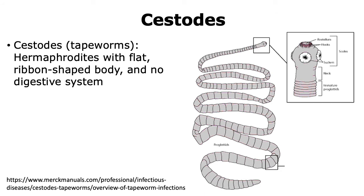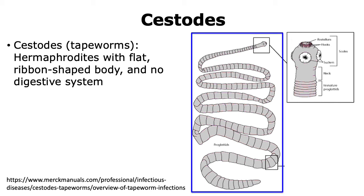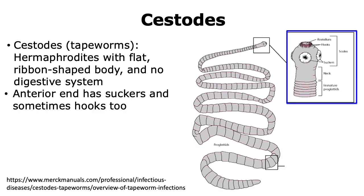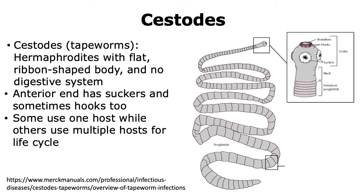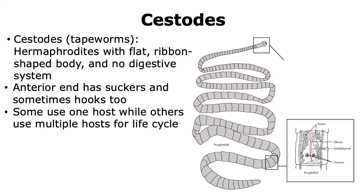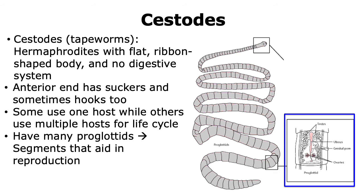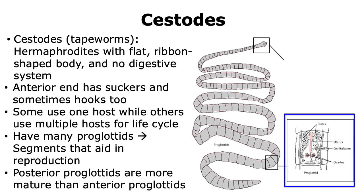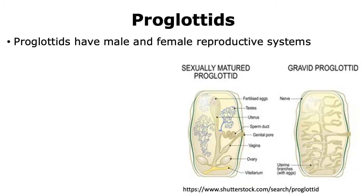Cestodes are helminths also known as tapeworms. These are hermaphrodites with a very flat, ribbon-shaped body, and they lack a digestive system. On the anterior end of the cestodes, they can have structures like suckers, or sometimes even hooks. Some cestodes use one host to complete their life cycle, while others can use multiple hosts. Cestodes have segmented bodies, and these segments are called proglottids. Proglottids play important roles in reproduction, and the posterior proglottids are more mature than the anterior proglottids. Proglottids have both male and female reproductive systems, making cestodes hermaphrodites, and they can form fertilized eggs.